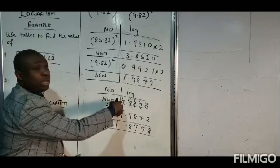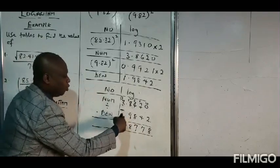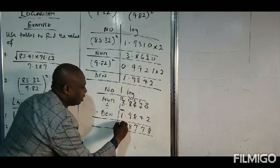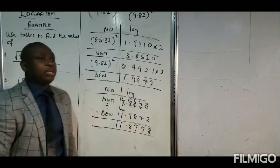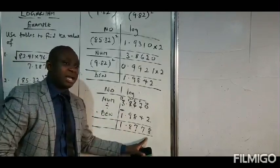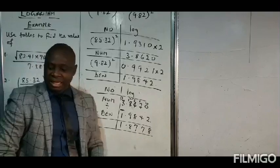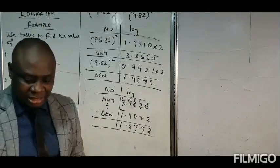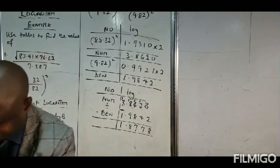Two can subtract one, so two minus one gives one. The result is 1.8778. At this point we use the mantissa to obtain the anti-logarithm.